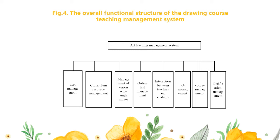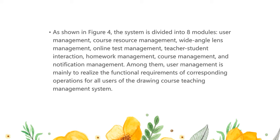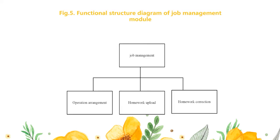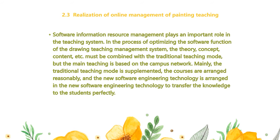Among them, user management is mainly to realize the functional requirements of corresponding operations for all users of the drawing course teaching management system. Software information resource management plays an important role in the teaching system. In the process of optimizing the software function of the drawing teaching management system, the theory, concept, content, etc. must be combined with the traditional teaching mode.